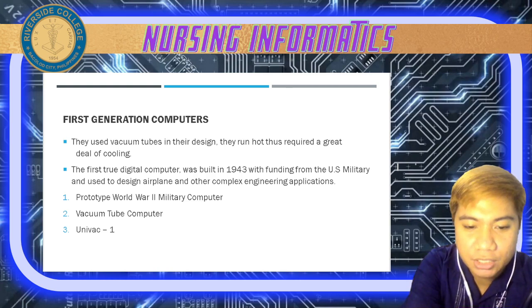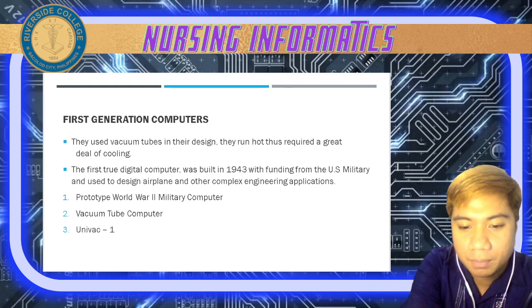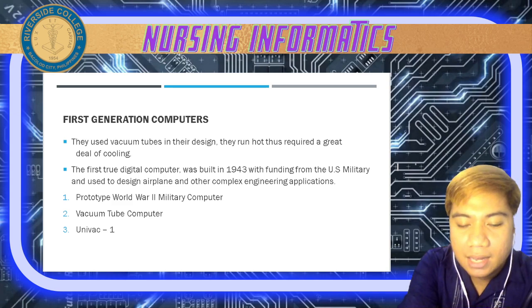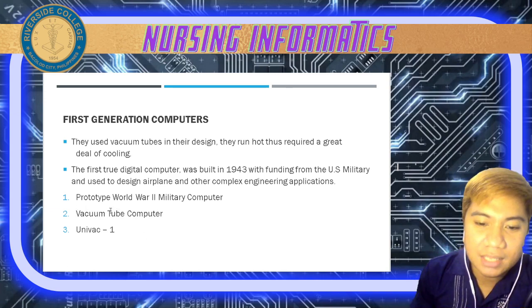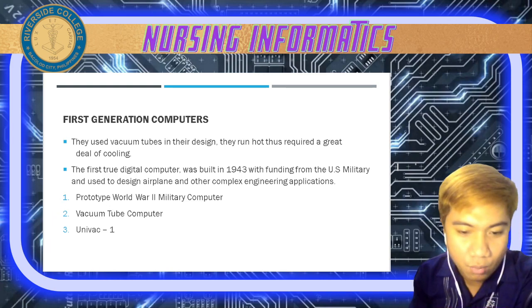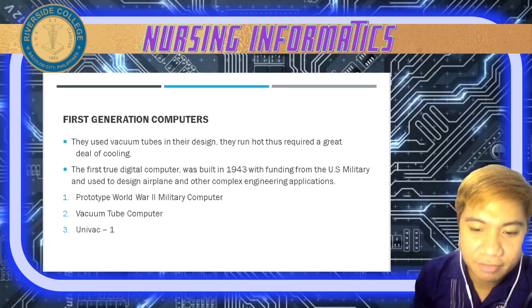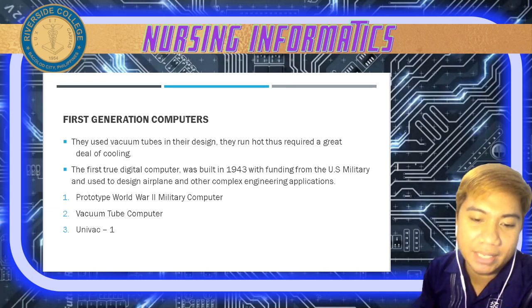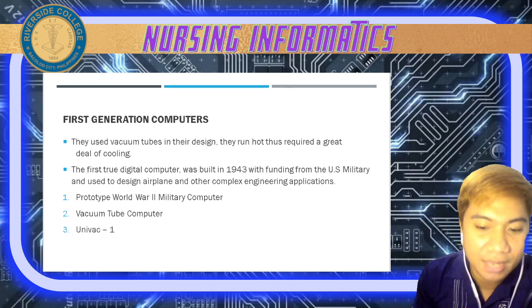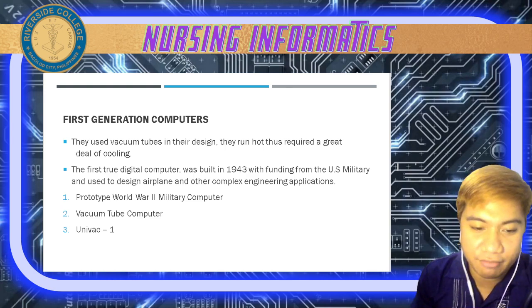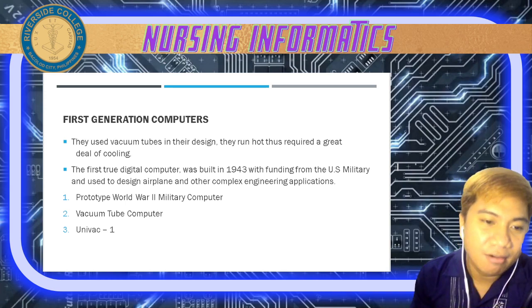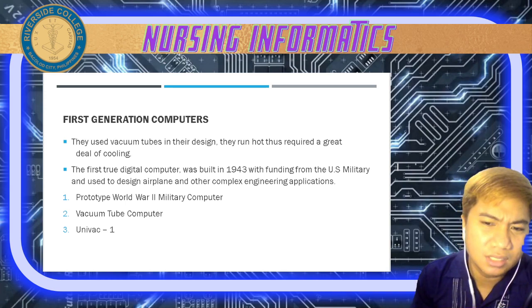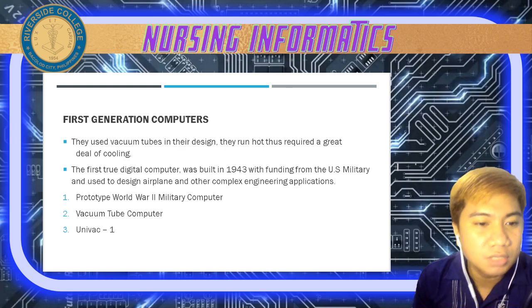Remington Corporation bought the Eckert-Mauchly Corporation and later made UNIVAC I. In 1955, it was the very first commercial application run when General Electric processed its payroll on the UNIVAC. These were the first generation computers — the prototype World War II military computer, the vacuum tube computer, and eventually UNIVAC I.